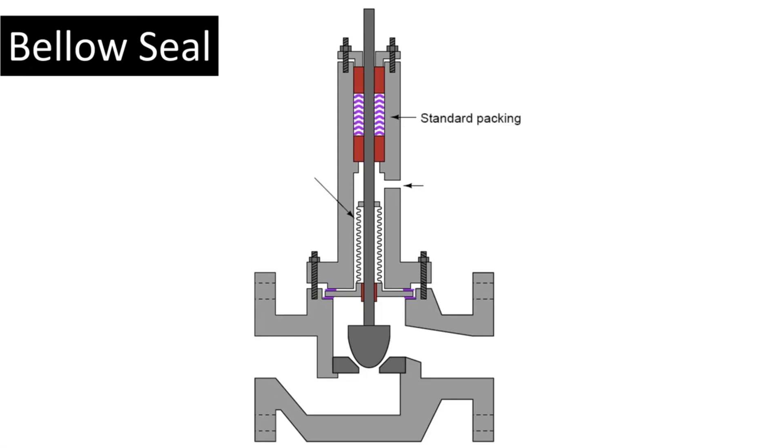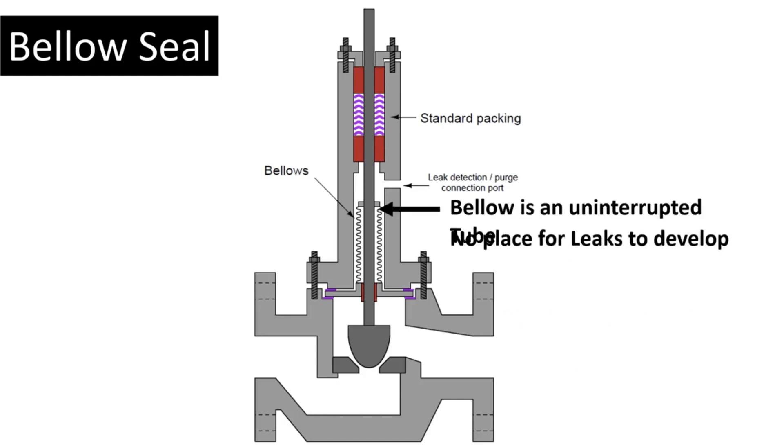Let's look at the next amazing way which is something called a bellow seal. This is a level up even than live loading but how does it work? Let's see. Here's your standard packing which is available. Now here are your bellows and here's something called a leak detection port. We'll look into it at the later part but right now let's first focus on the bellow. Bellow is an uninterrupted tube.